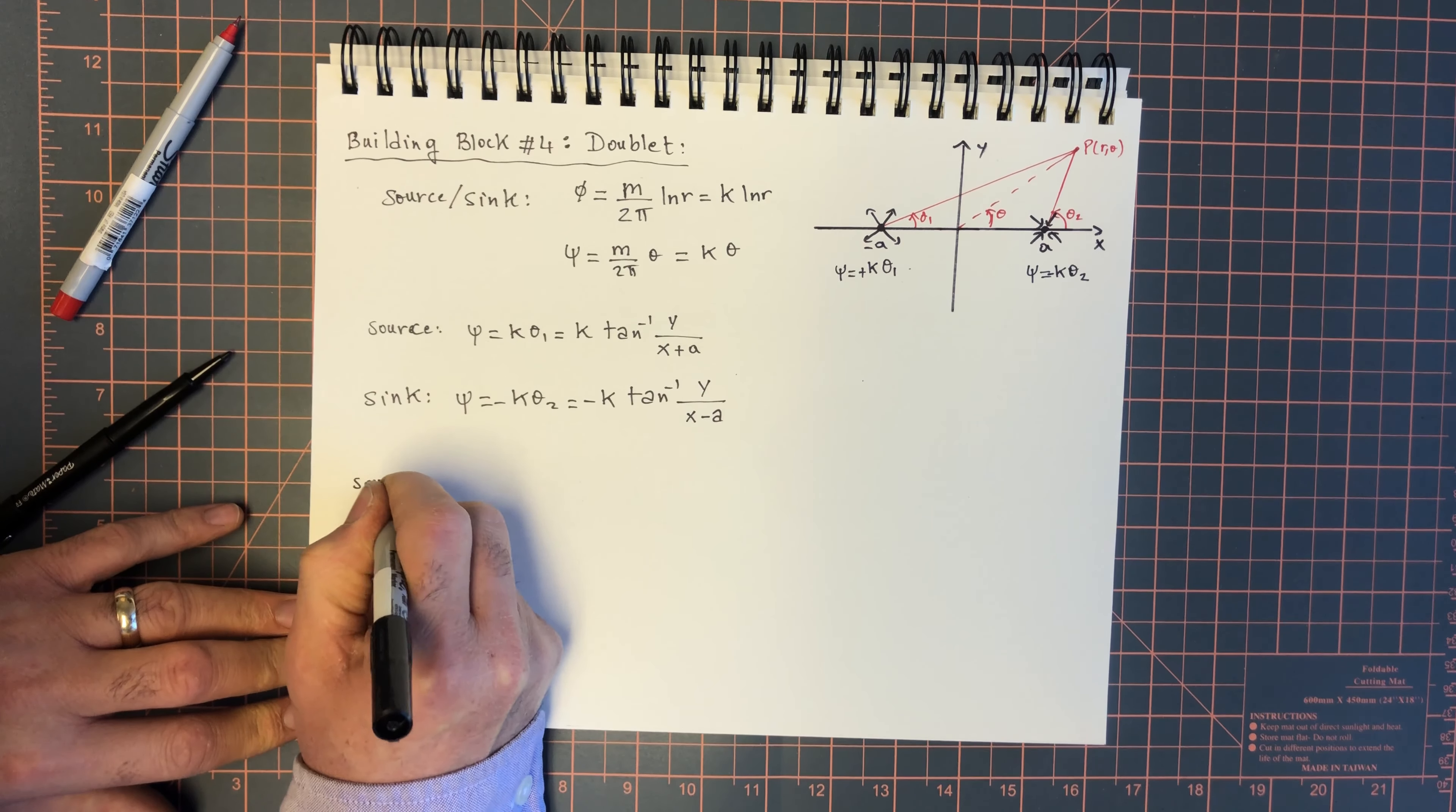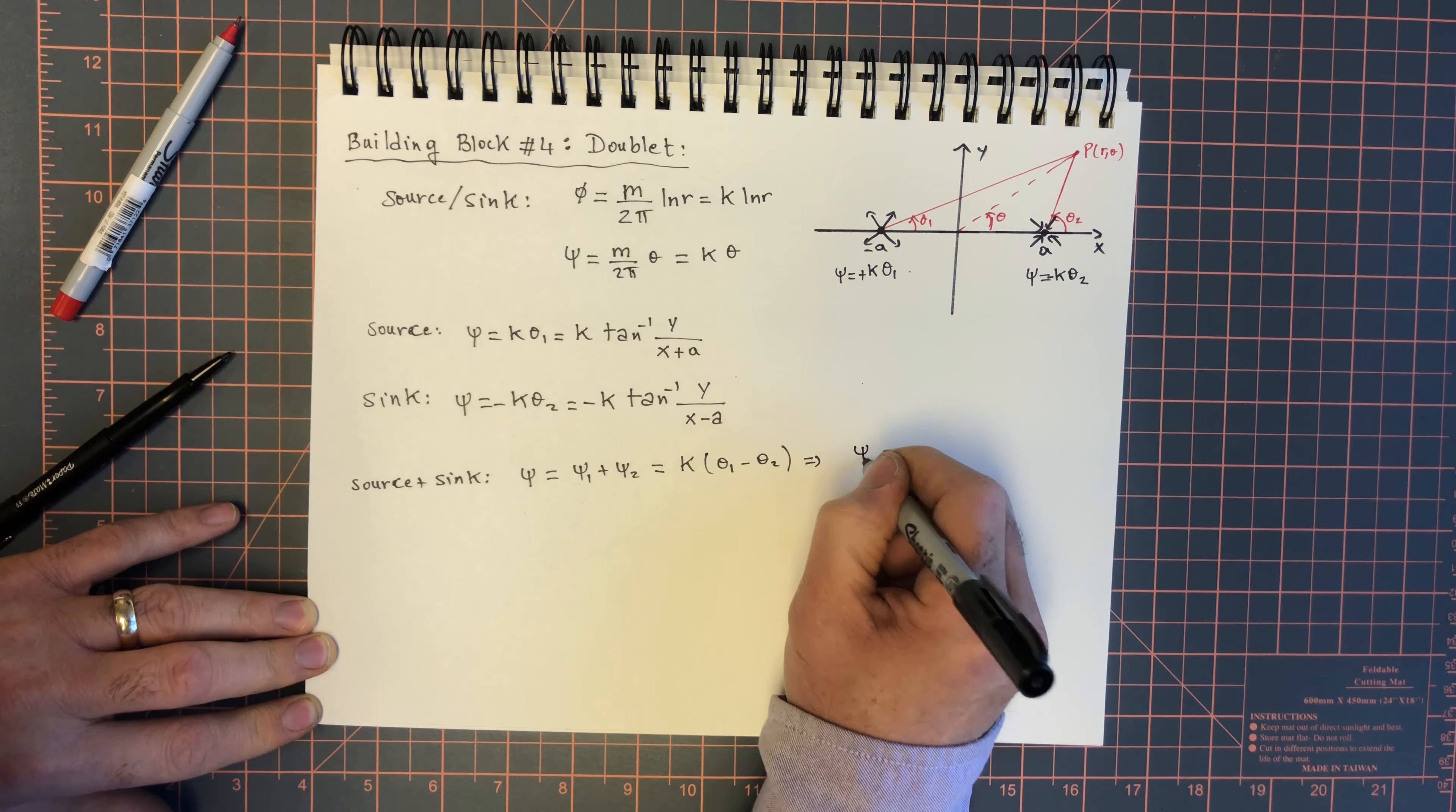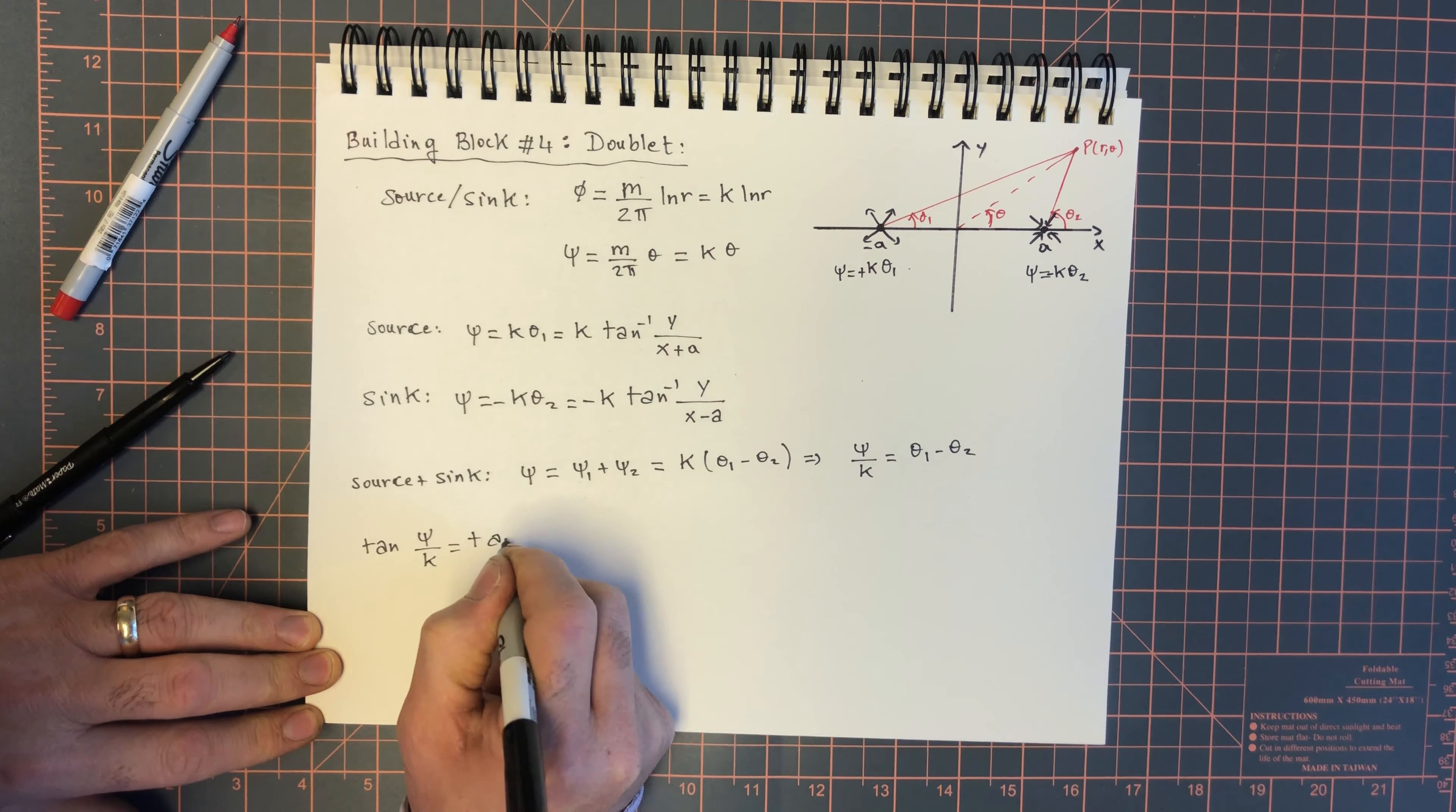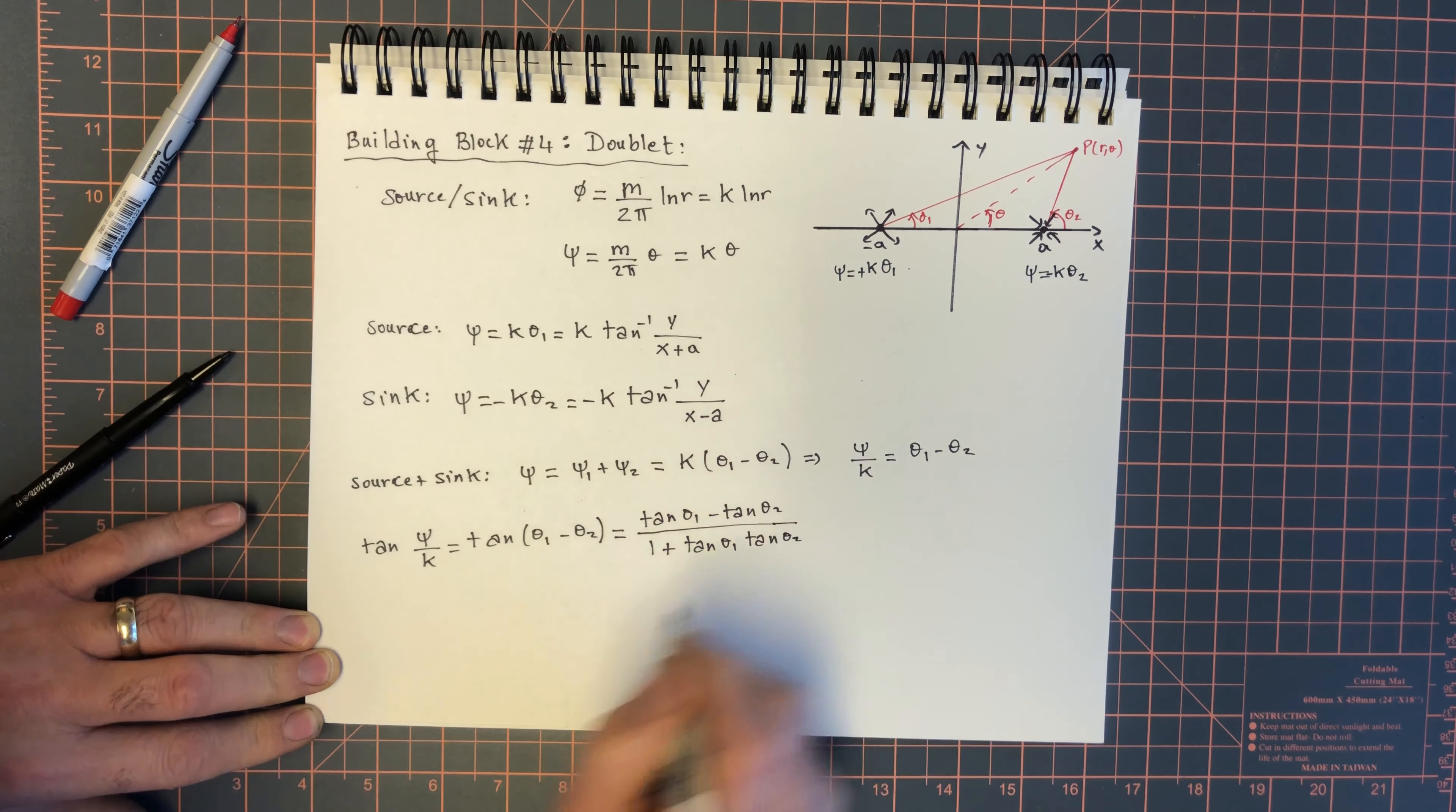The superposition source plus sink is going to give us psi equal to psi 1 plus psi 2 and that's equal to k into theta 1 minus theta 2. Therefore, psi over k is equal to theta 1 minus theta 2. Here's what we're going to do next. We're going to take the tangent on both sides. So, we're going to do tan psi over k equals tan of theta 1 minus theta 2.